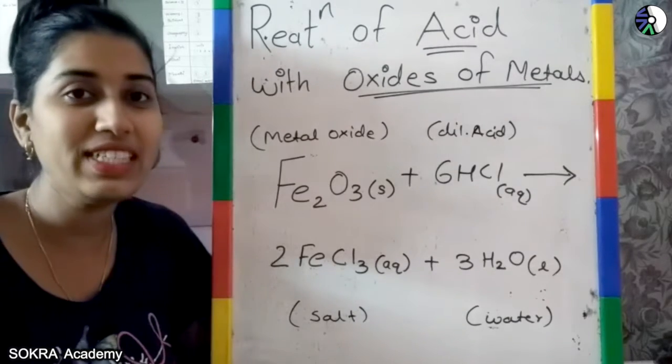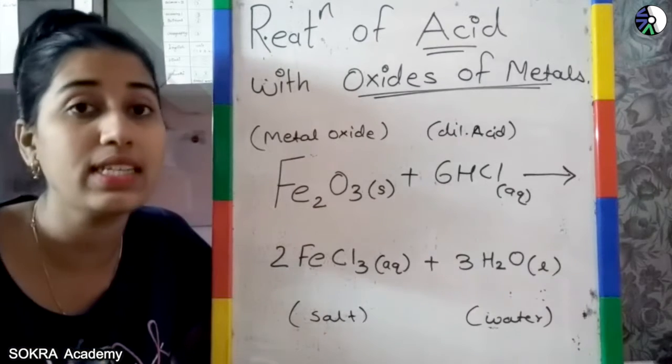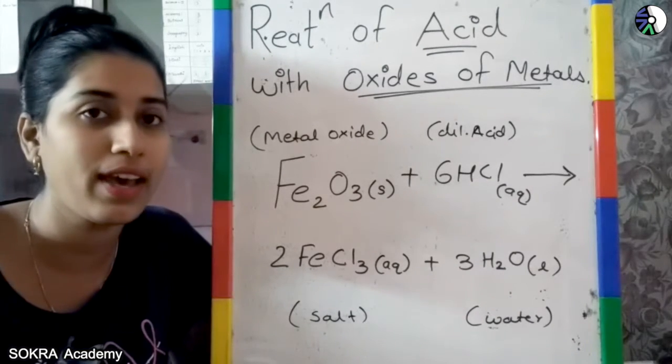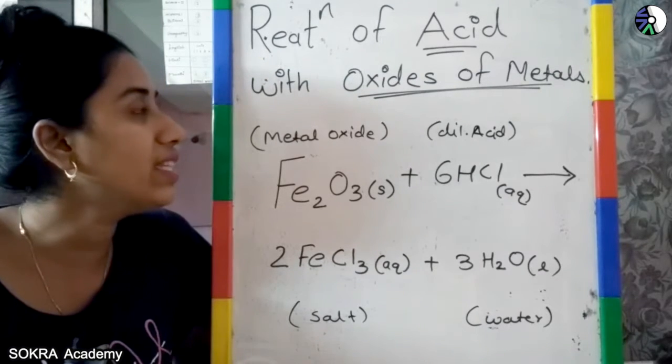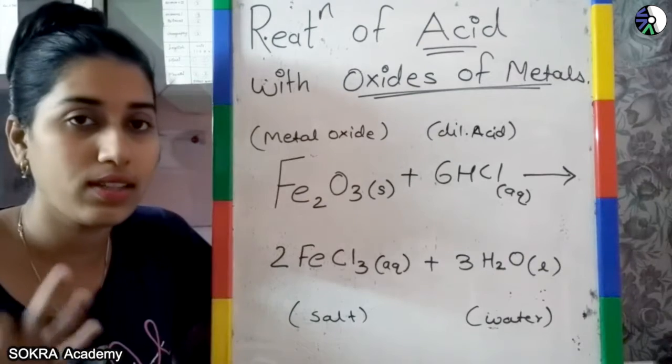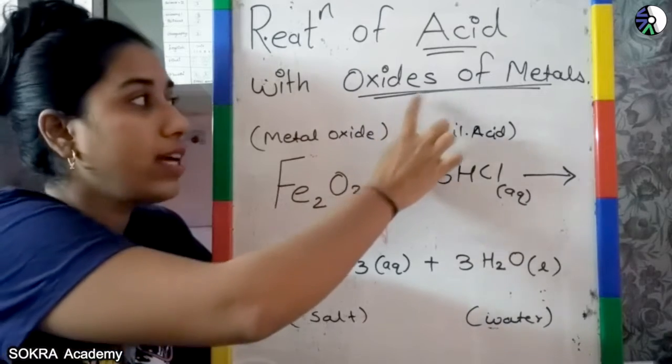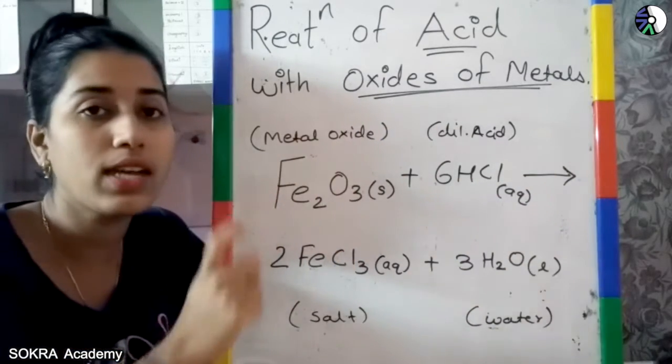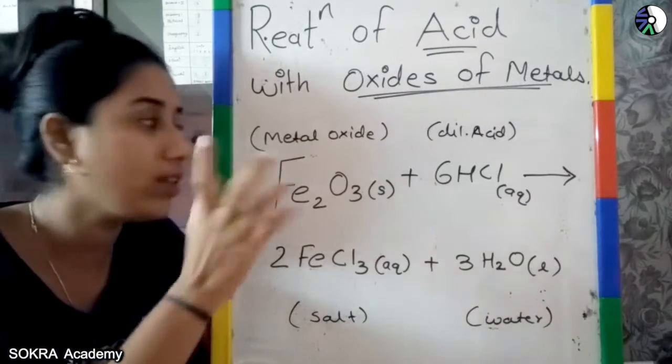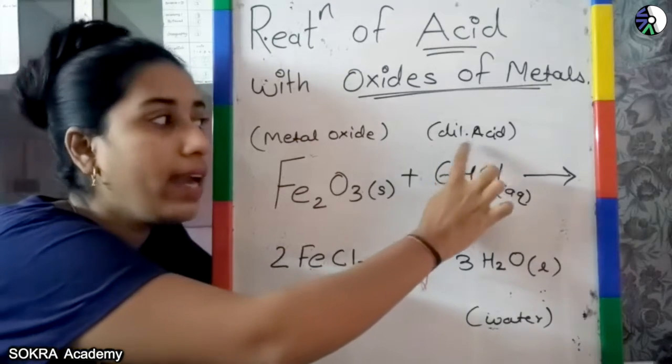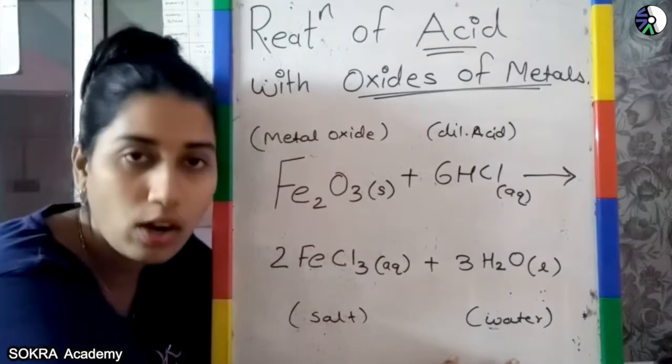Hello students, so we have already seen the neutralization reactions. We have seen acid which reacts with metal, so what is it called? Salt and water. So now in this reaction, that is nothing but a third reaction, which is your acid. If the oxides of metal react with dilute acid, it will always produce salt and water.